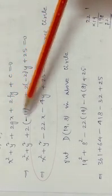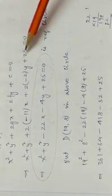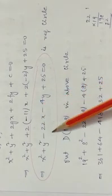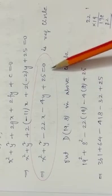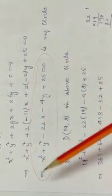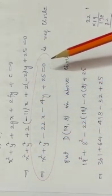The c value is also found. Now substituting g = -11, f = -2, c = 25 into equation 1 (x squared plus y squared plus 2gx plus 2fy plus c equal to 0). After simplification: x squared plus y squared minus 22x minus 4y plus 25 equal to 0 is the required circle. This is the method to find a circle through 3 points.